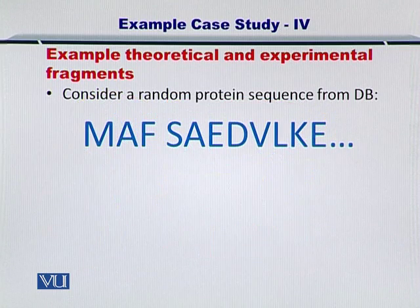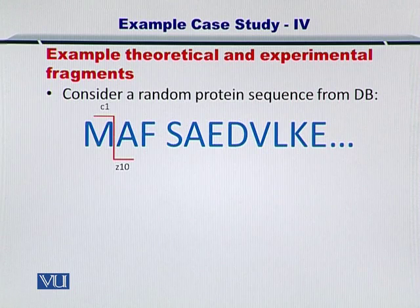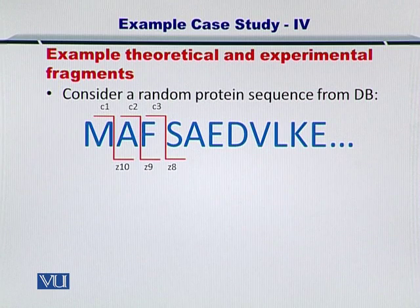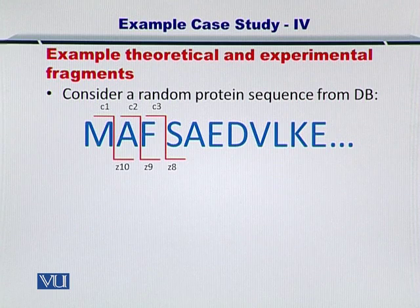Once you have generated the in silico spectrum, you want to look at the MS2 data. In MS2, as you saw in the previous module, we had C1, C2, C3 and Z8, Z9, and Z10 fragments — six different fragment types in all — and we want to compare these fragments with the theoretical spectra.